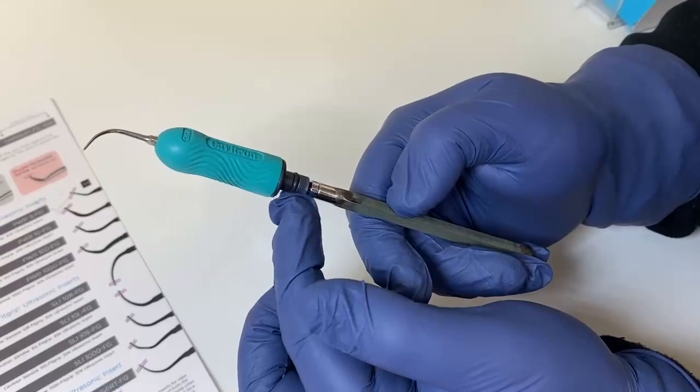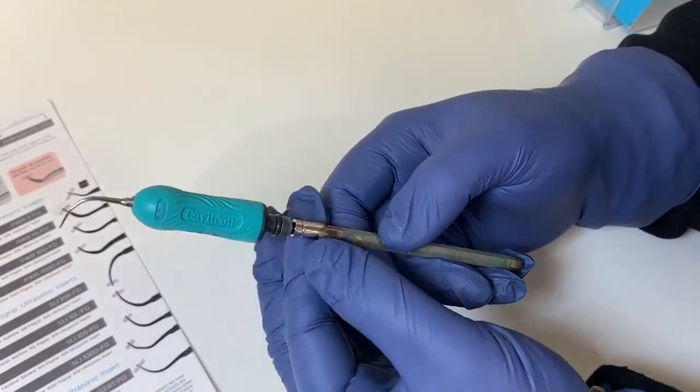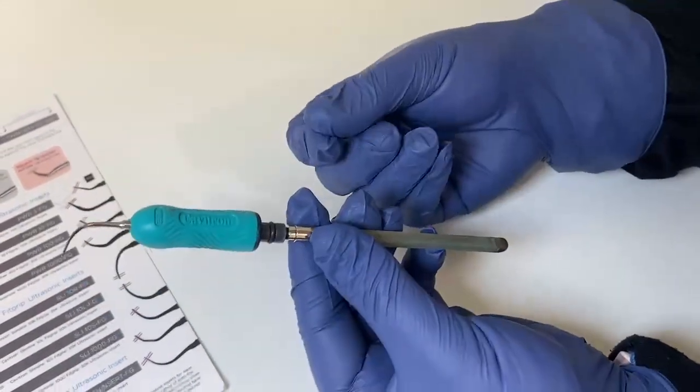If they're starting to dry or crack, you can replace them, or it might be time to just replace your whole insert. This helps it stay nice and tight in the black handle.